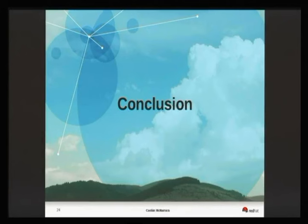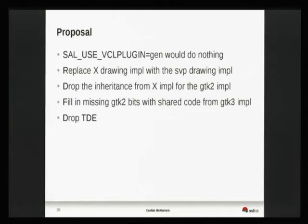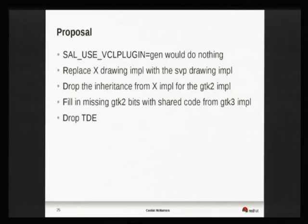To summarize: the smaller stuff I would probably do is that the gen backend wouldn't work directly anymore. The X drawing would go away and be replaced by the Cairo drawing that's been tested for about a year in the GTK3 and headless backends. GTK2 would move away from the existing X11 implementation of drag-and-drop and cut-and-paste, with those bits repurposed from the GTK3 port. We definitely drop the TDE support. And anything remaining that's used only by KDE4 gets moved into the KDE4 directory and becomes part of that. That's my proposal — in the absence of any major complaints, that's probably what I'll do over the next 12 months.